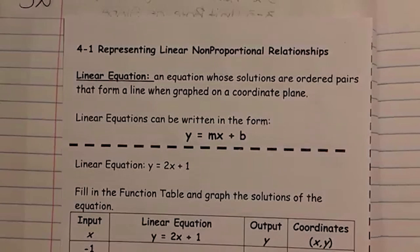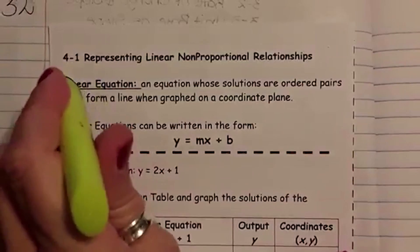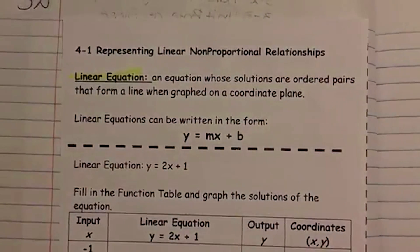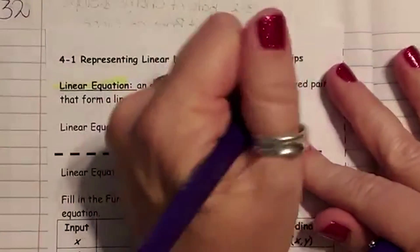Alright, so there's a couple things I want to talk about. Linear equation. This is an equation whose solutions are ordered pairs. Your ordered pairs are points on the line.